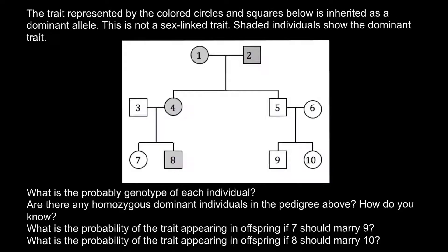Hello and welcome to Nikolai's genetics lessons. Today's problem is: the trait represented by the colored circles and squares below is inherited as a dominant allele. This is not a sex-linked trait. Shaded individuals show the dominant trait.